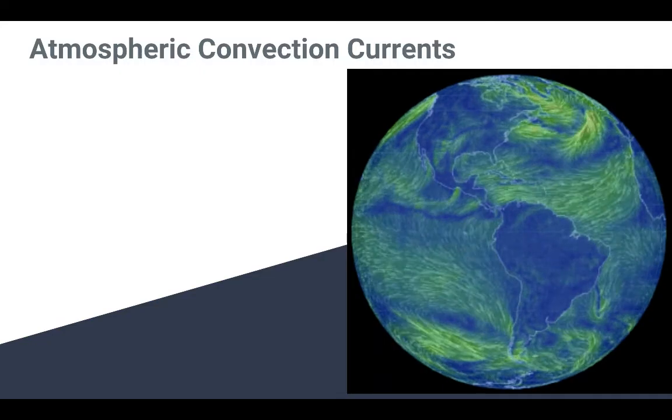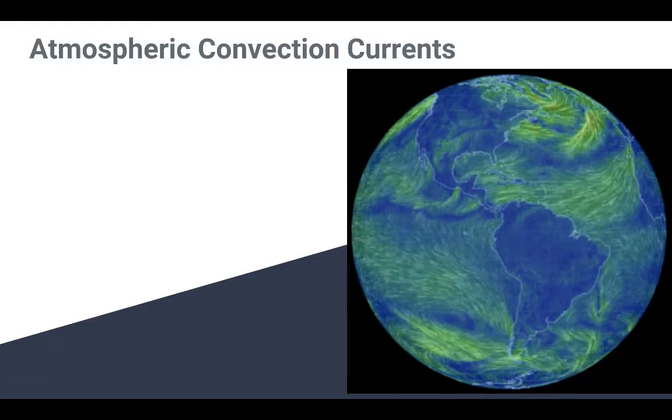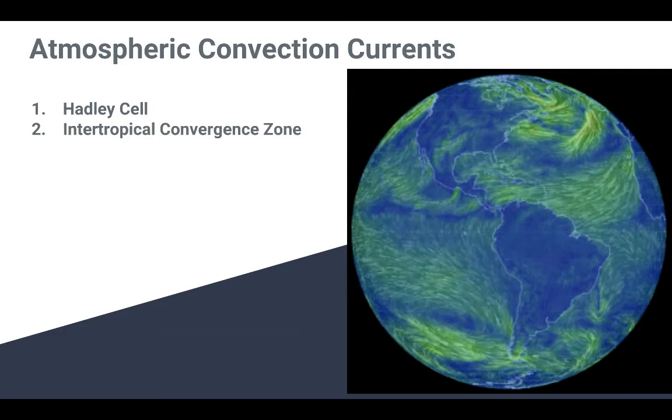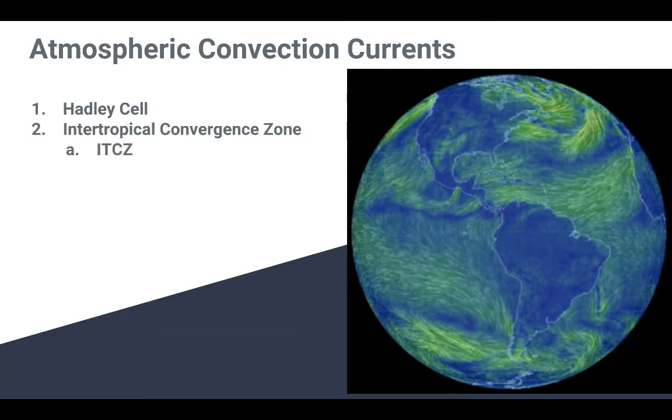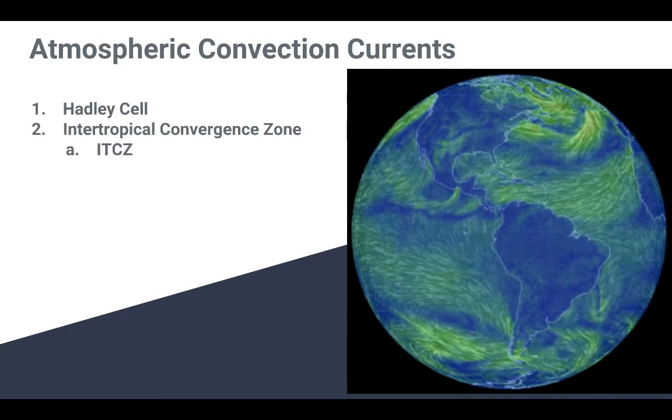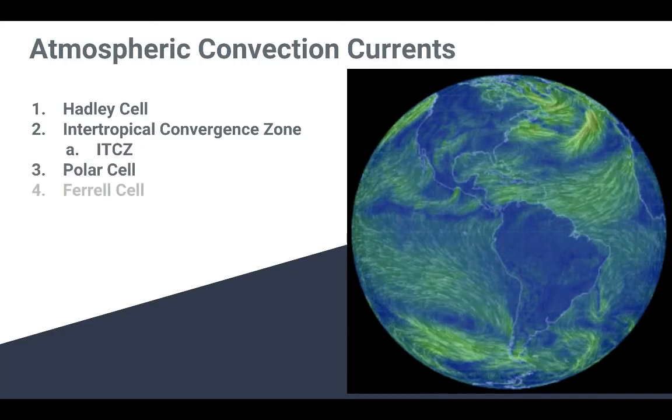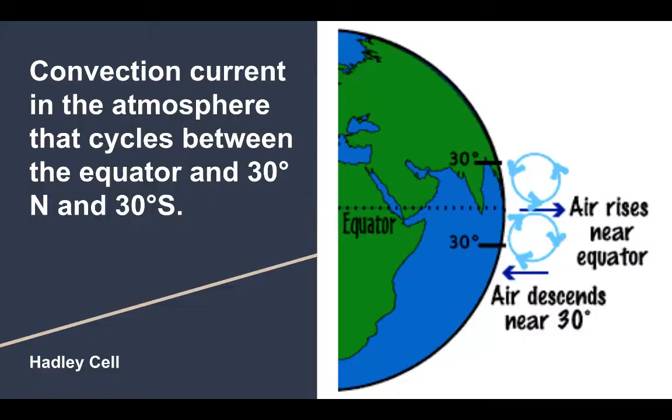So there are these cells that we have, we call them cells, and they're the atmospheric convection currents, and there's four of them. We're going to look at each of them individually: our Hadley cell, our intertropical convergence zone, which is usually just referred to as the ITCZ, the polar cell, and finally, the Ferrel cell.